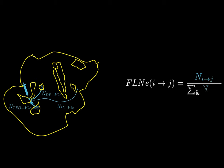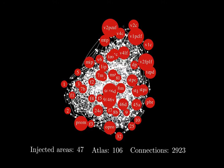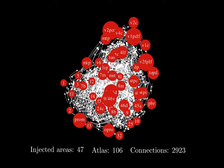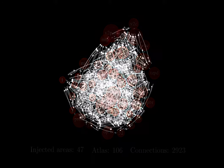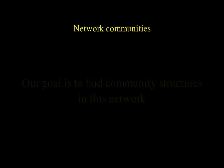With these numbers we can compute the efferent E index which is the fraction of neurons from a source area to a target area. In other words, they are probabilities. Here we can see a graphical representation of the 47 injected areas from 106. There are around 3000 connections. Our goal is to find the community structures in this network.